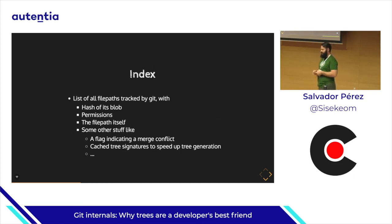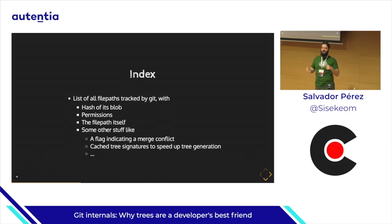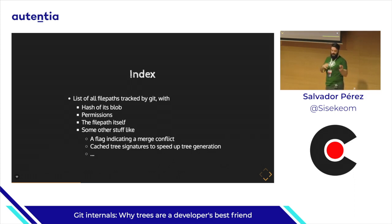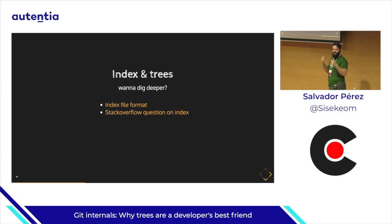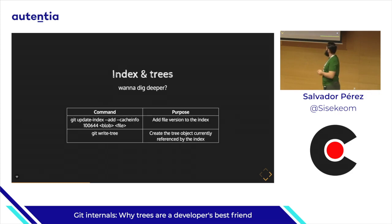I kinda lied a bit — there's one fourth data structure: the index. The index is kind of a dumping ground for everything. It contains a lot of information on optimizations, and it contains info on what files you did add that are pending to commit. It doesn't have very thorough in-depth documentation on the structure. I found two links which you can check in the slides — I added the link to the slides in the talk description, and I will tweet them as well.